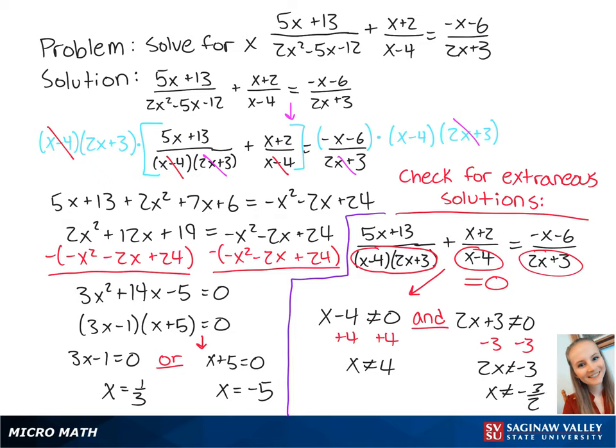Since neither of our solutions are 4 or negative 3 over 2, x equals 1 third and x equals negative 5 are both solutions to our problem.